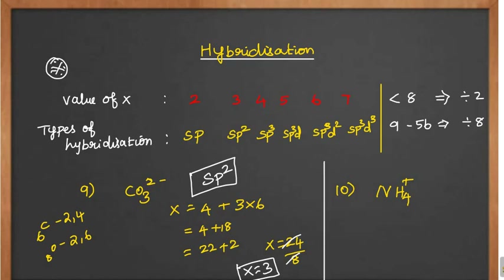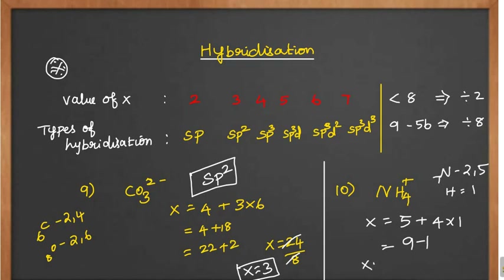Last one: NH₄⁺. Nitrogen has atomic number 7, so 2, 5. Hydrogen has only 1 outermost electron. So x = 5 plus 4 into 1 = 9. Since there is a positive charge, we subtract 1. So x value is 8. Since the value is less than 8... divide by 2 to get 4. x value = 4 means sp3 hybridization.